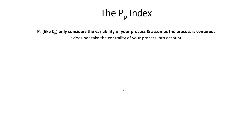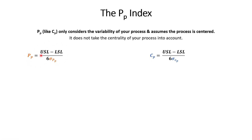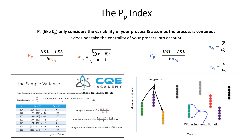Now let's switch gears and talk about a different index: PP. Here's the CP equation — upper spec minus lower spec divided by 6 sigma — and here's the PP equation: upper spec minus lower spec divided by 6 sigma. They look identical, and the answer is yes — the difference is in how the estimates of the standard deviation are calculated. For CP and CPK, we use the long-form technical equation for estimating standard deviation.